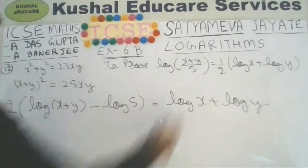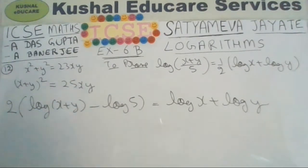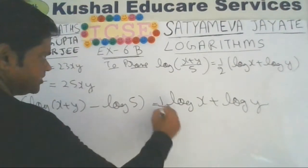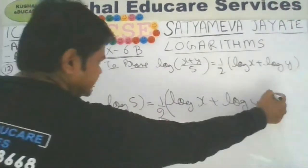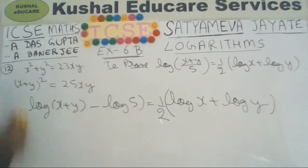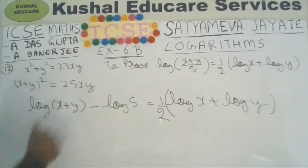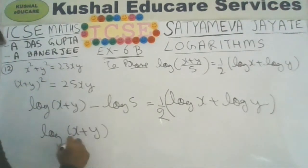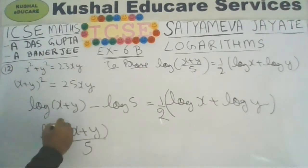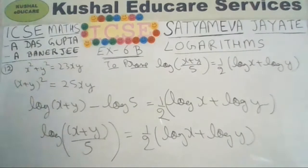Transfer the 2 from left to right — it becomes 1/2 — so we get 1/2 times log of x plus y upon 5, equals log x plus log y. The subtraction indicates division, giving log of x plus y upon 5. Hence proved.